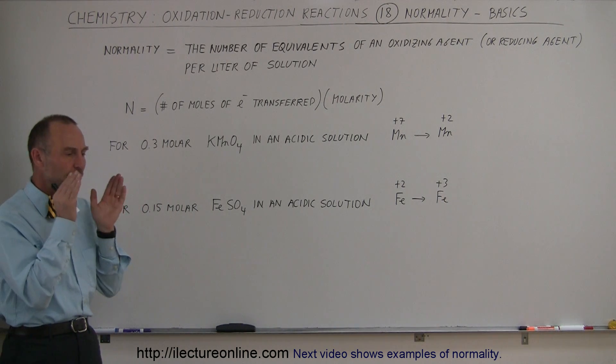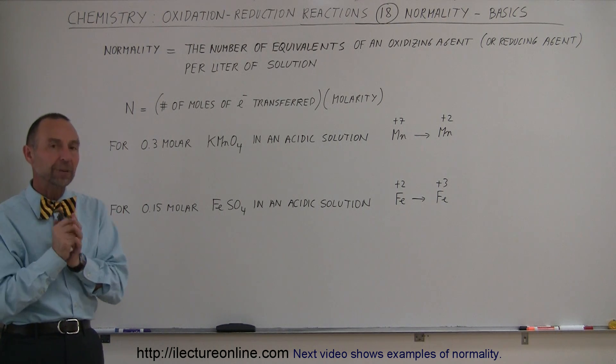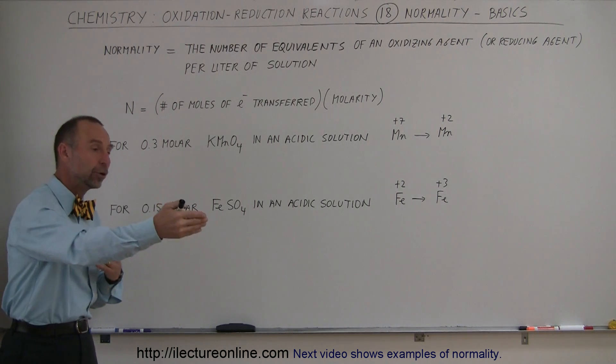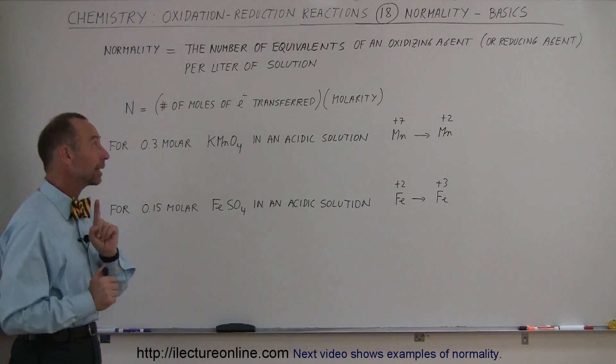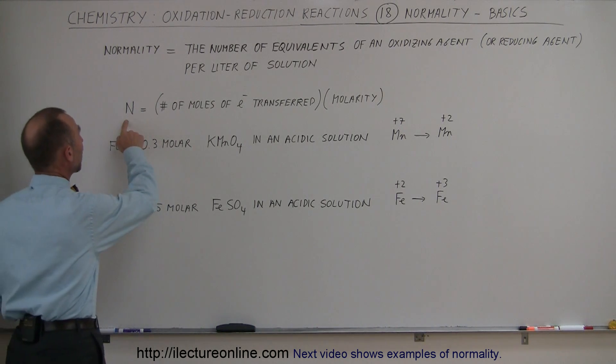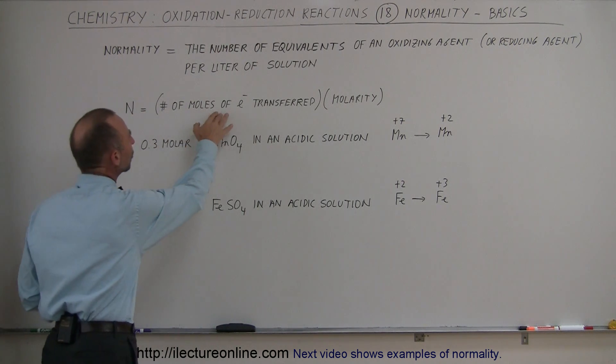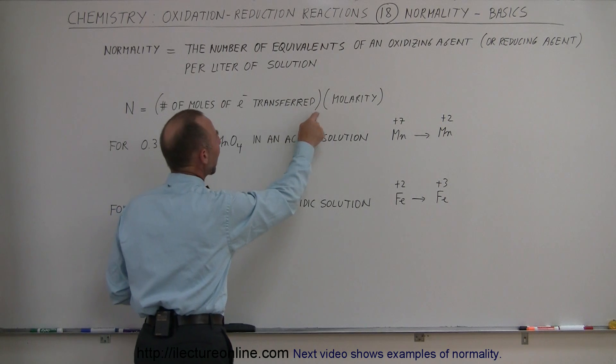And so the normality has to do with the total number of moles of electrons being transferred, either donated or accepted, per liter of solution. And that's what we mean by normality. So the equation then becomes normality, which we use the letter N, is equal to the number of moles of electrons transferred times the molarity.